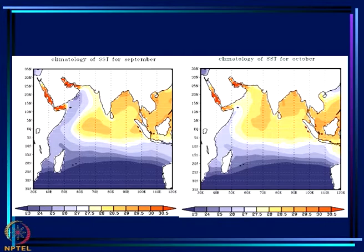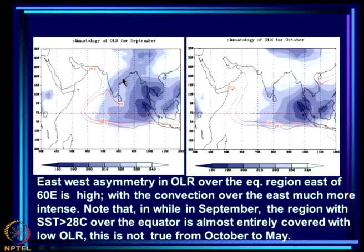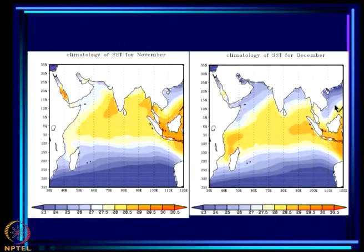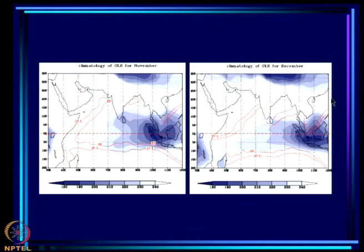In October, a large part of the Arabian Sea has no convection although SST is above the threshold. Although much cooling of the Arabian Sea occurred during July–August, it has not really gone below the convective threshold, so we must attribute the lack of rain over this region during the post-monsoon to dynamics. In November and December, much warming has taken place, but cooling of the northern parts as the sun moves south again restricts the low OLR region once more to the eastern part of the basin.